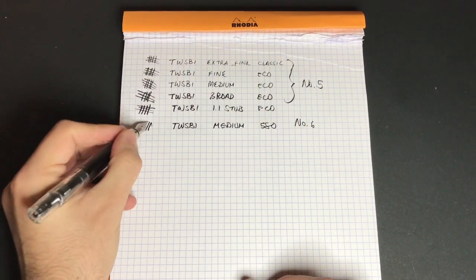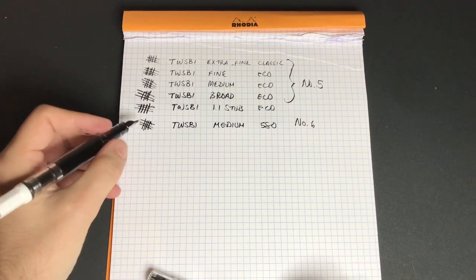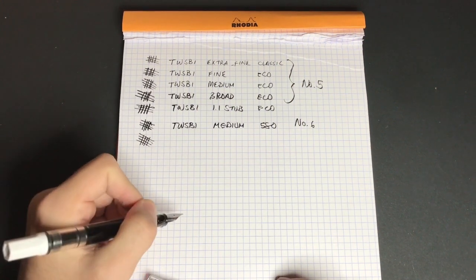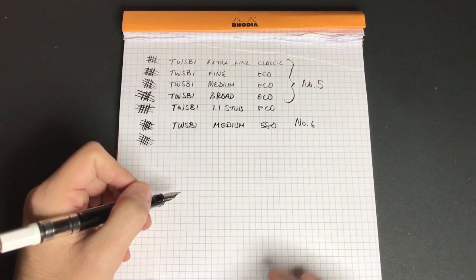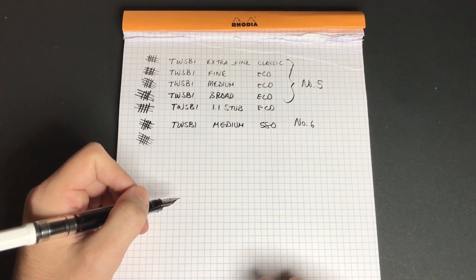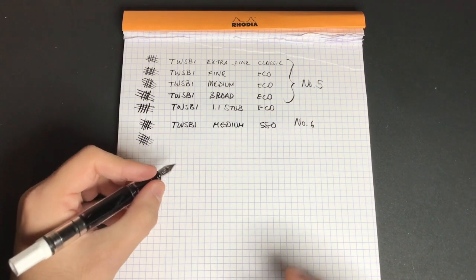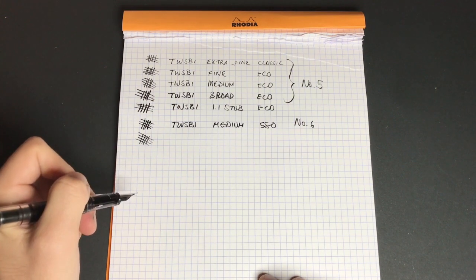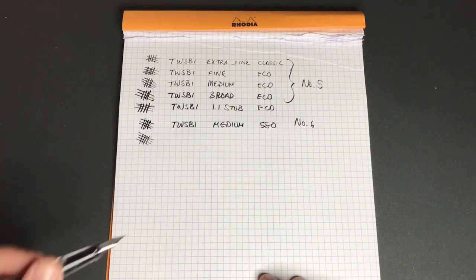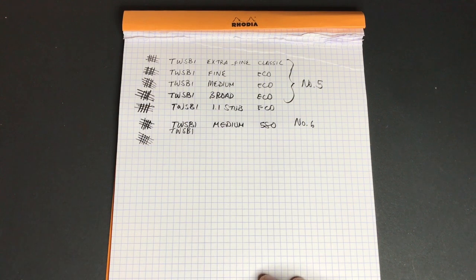So in comparison to the number five medium, it is a slightly wider line. Now this could be pen to pen. Every pen is going to write slightly differently. You're not going to get exactly the same line width across the brand. It should be fairly close, but we're going from a number five to a number six there, and it does lay down just a little bit more ink. So the line is ever so slightly wider on the 580, the number six nib.